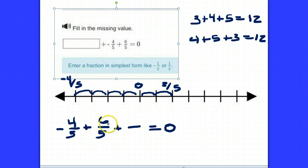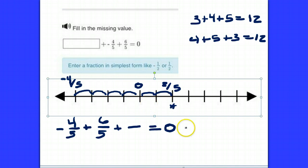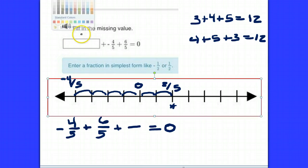Now, what we need is a number that when added to where we wound up will get us back to 0. Obviously, we need to get back 2 spaces. So we are going to add to this a negative 2 fifths.